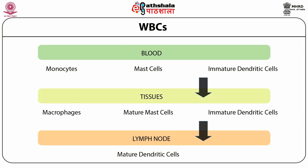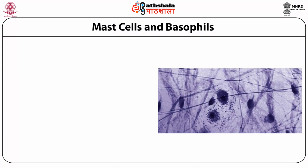These three are also called polymorphonuclear leukocytes as their nuclei have irregular shapes. They circulate in the blood and enter tissues only where and when there is an infection or inflammation. Immature dendritic cells enter the peripheral tissues via the bloodstream, mature after encountering an antigen, and then migrate to the lymph nodes where they activate antigen-specific T cells. Monocytes also enter tissues via the bloodstream and differentiate into macrophages, becoming tissue-resident phagocytic cells. Mast cells arise in the bone marrow but their complete maturation occurs in the tissues.